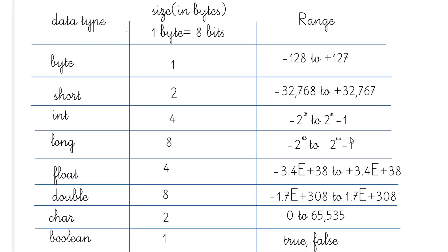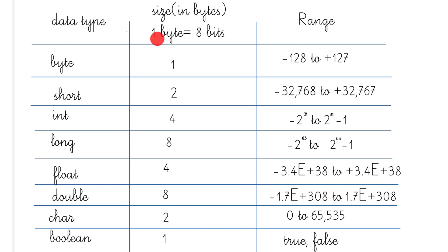In this video, I'm going to talk about data types, the size (memory occupied) by each data type, and the range of each data type. We have a table with three columns: the first column is the data type, the second column is the size in bytes, and the third is the range.